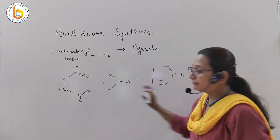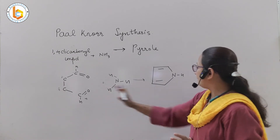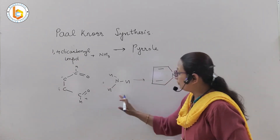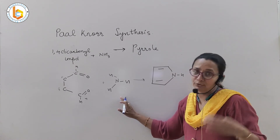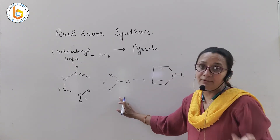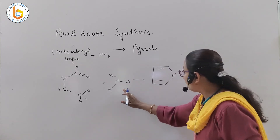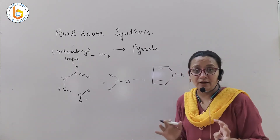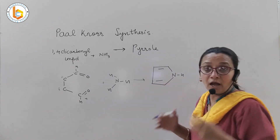How will it react with NH3 to give you pyrrole? This is the reaction in front of you: the 1,4-dicarbonyl compound reacts with ammonia — you can say ammonia or you can say primary amine. Here I am taking ammonia. It reacts with ammonia to give you pyrrole.